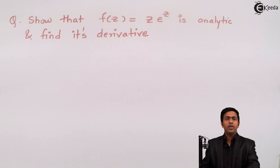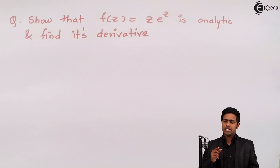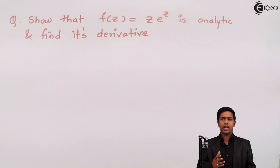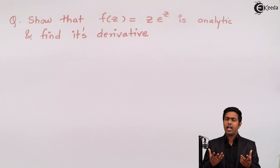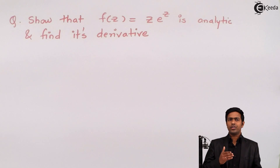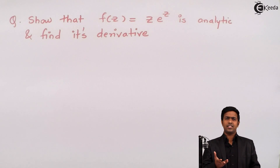Hello friends. In this problem we have to show that f(z) = ze^z is analytic and we have to find out its derivative. To show that a given function f(z) is analytic, we use the Cauchy-Riemann equations. By verifying that the Cauchy-Riemann equations are satisfied, we can confirm that f(z) is analytic.